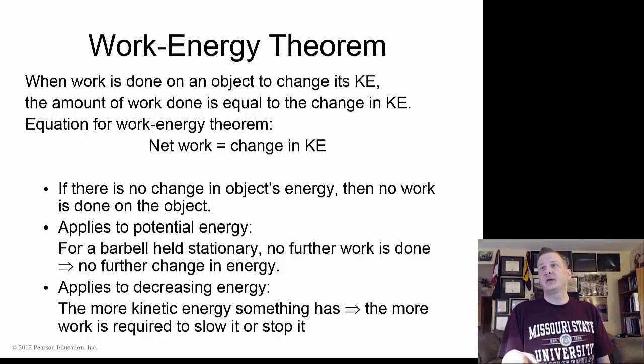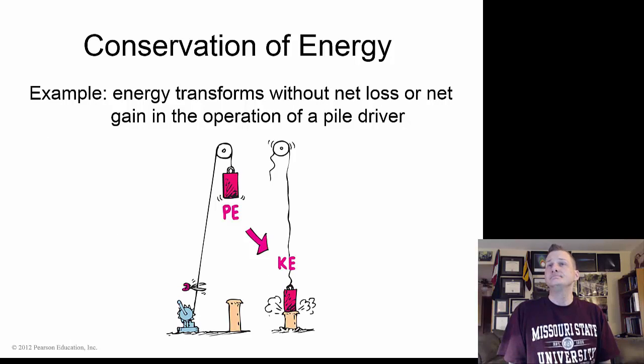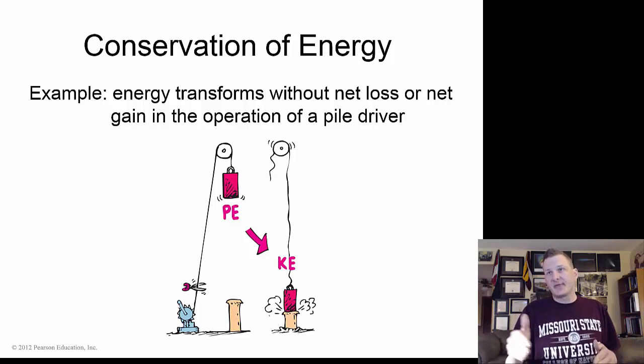So back to the work energy theorem. If work is done on an object to change its kinetic energy, then the amount of work done is equal to that change in kinetic energy. They have to equalize. If there is no change in the object's energy, there is no work to be done on an object. Energy is conserved either through potential energy or kinetic energy in motion.